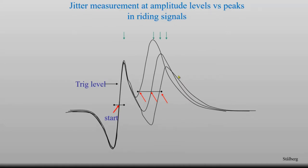But in a situation where signals are riding on each other — not uncommonly seen in concentric needle electrode recordings — the original amplitude level technique measures on different parts of the signal. This signal is measured in its middle and another part is measured closer to the positive peak. Whereas if we use peak measurements, we measure on the peaks independent of the riding phenomenon.